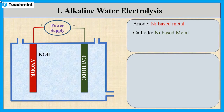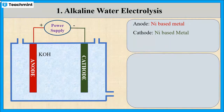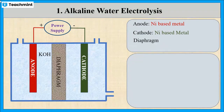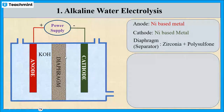alkaline electrolyte such as potassium hydroxide or sodium hydroxide. The two electrodes are separated by a thin porous foil, commonly referred to as diaphragm or separator.